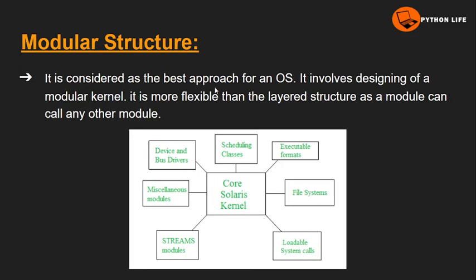The next one is modular structure. The modular structure uses a core set of functionalities. The remaining functionalities are dynamically loaded during runtime in the form of modules. Compared to the layered structure or micro kernel structure, the modular structure provides better functionality. It is considered the best structure for the operating system.